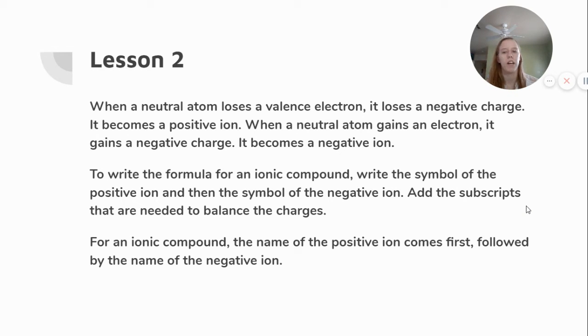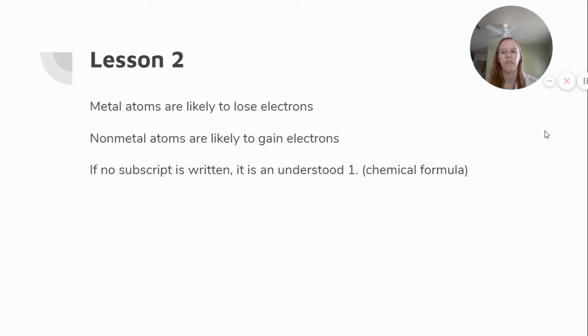For an ionic compound, the name of the positive ion comes first, followed by the name of the negative ion. Metal atoms are likely to lose electrons, whereas nonmetal atoms are likely to gain electrons. If no subscript is written, it is an understood one, and that's in its chemical formula.